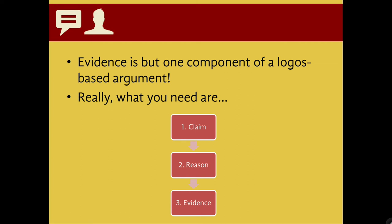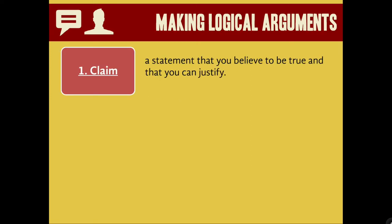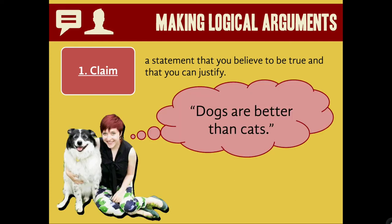The theme of today's lesson is threes. So what does it mean to make a claim and then back it up with reasoning and evidence? I have an example that seems a little funny, but it's really good at illustrating why this framework is so powerful. A claim is a statement you believe to be true and you can justify. For example: I think that dogs are better than cats.